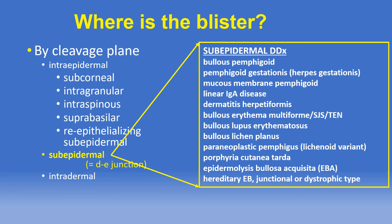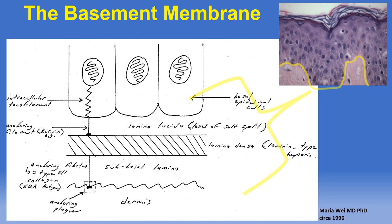In this session we will not be covering diseases already discussed in the interface dermatitis session, including erythema multiforme, lupus, and lichen planus. We also will not be covering hereditary epidermolysis bullosa. All the subepidermal blistering disorders have their pathogenesis centered in one or more structures of the basement membrane zone, which at higher magnification reveals multiple structures including the basal layer of keratinocytes overlying the lamina lucida, then the lamina densa, and underlying anchoring fibrils known as type 7 collagen.